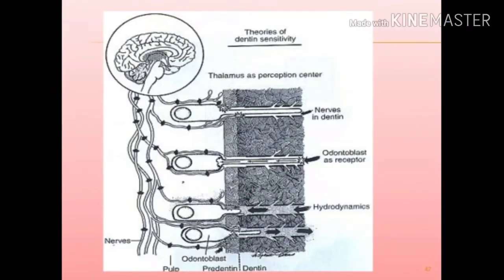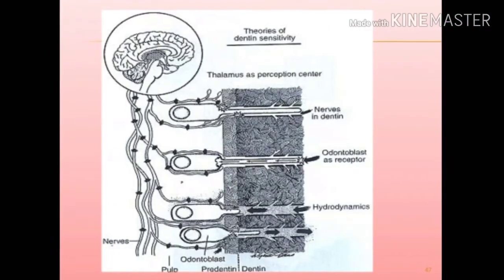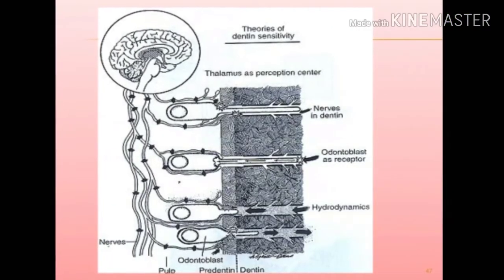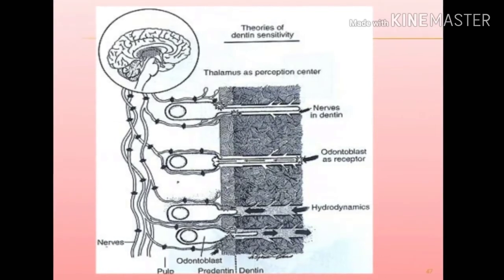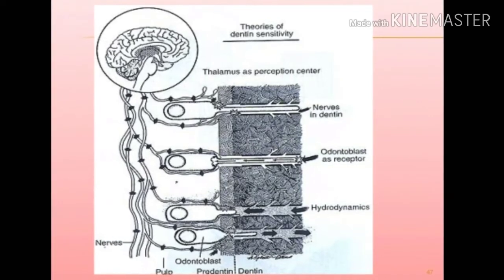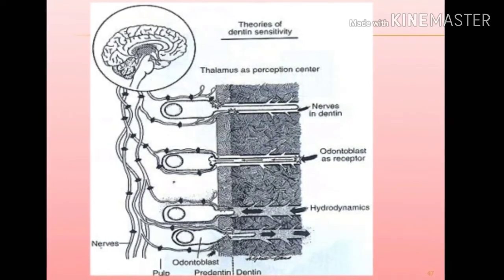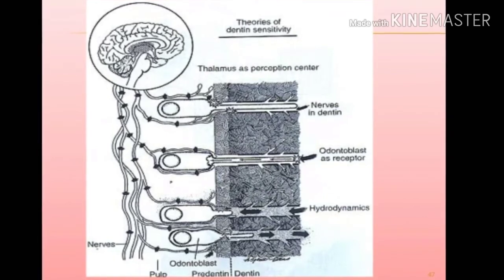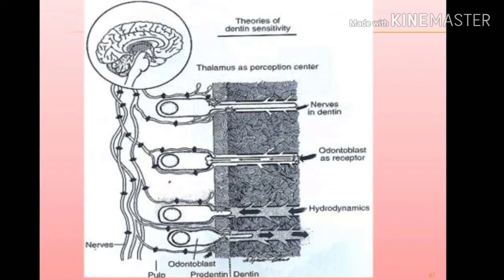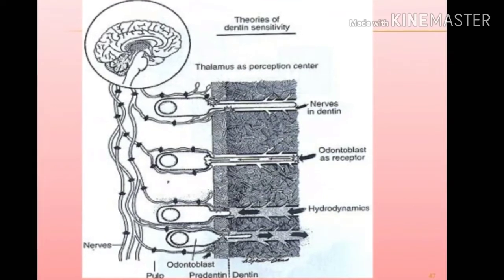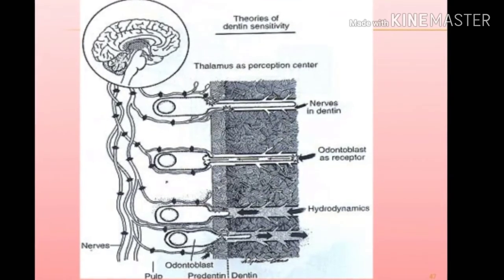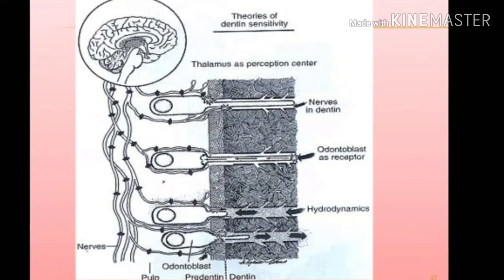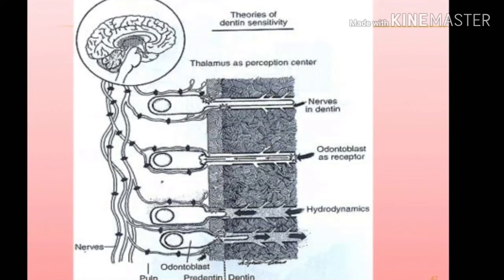The figure shows the theories of dentine sensitivity. The cell body of the odontoblast is present in the pulp and its processes are extended towards the dentine. The cell body is supplied by nerves from the brain, the thalamus, as a perception center.